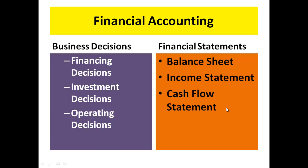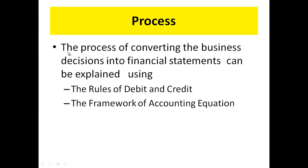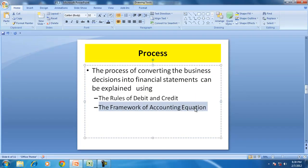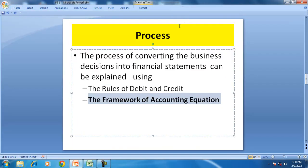But how is that done? The process of converting business decisions into financial statements can be explained by using the rules of debits and credits, or it can be explained by using the framework of the accounting equation. We are going to use the framework of the accounting equation, not the rules of debit and credit.